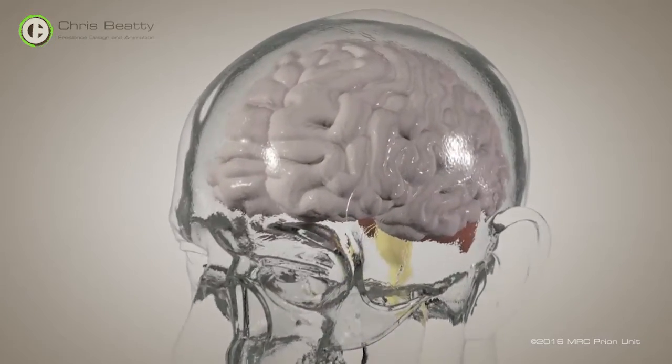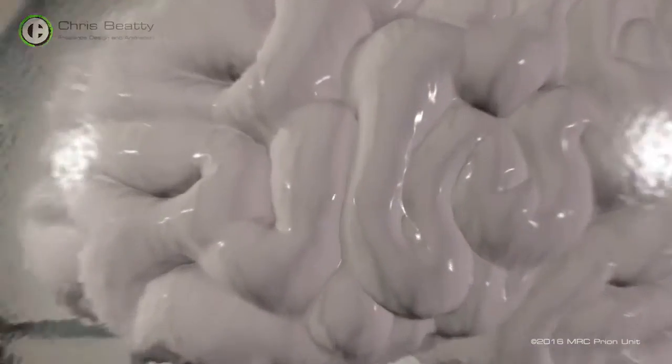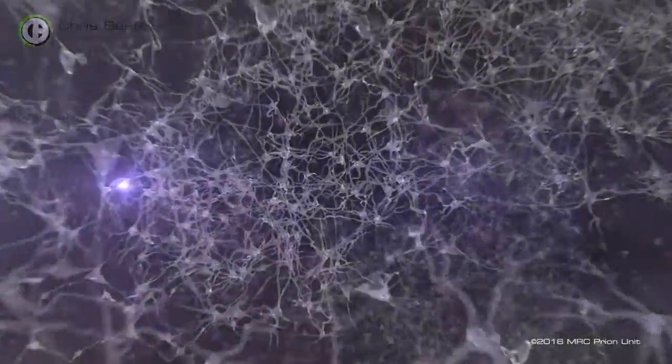Our brains each contain a hundred billion nerve cells or neurons which are connected by branches of the cells called dendrites.